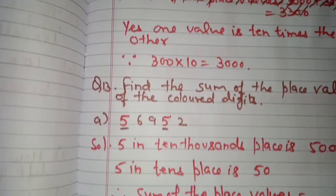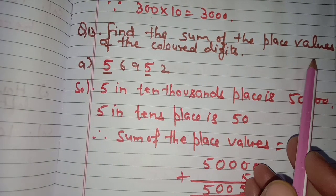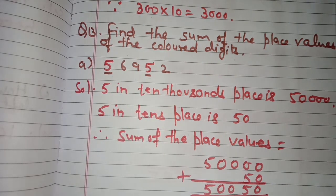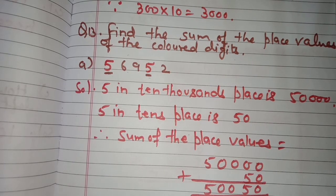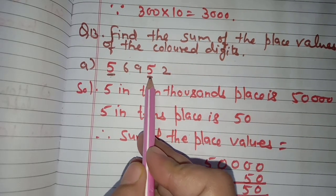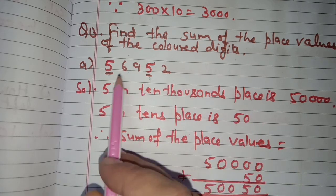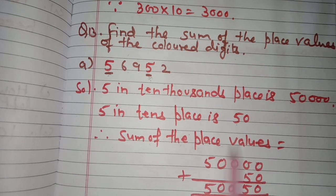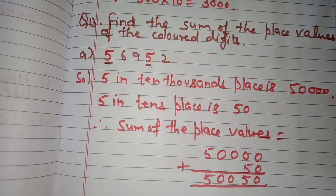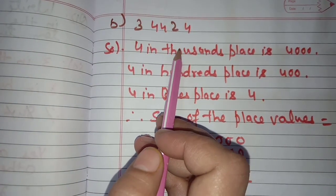Question number 13: find the sum of the place values of the colored digits. Part a: 56,952 — the five in ten thousands place is 50,000 and the five in tens place is 50. We add both place values: 50,000 + 50 = 50,050. The sum of the place values is fifty thousand and fifty.